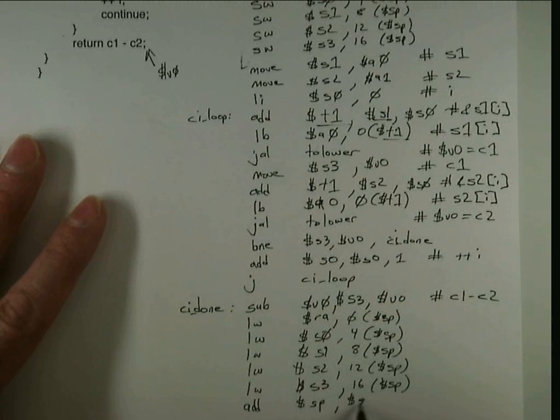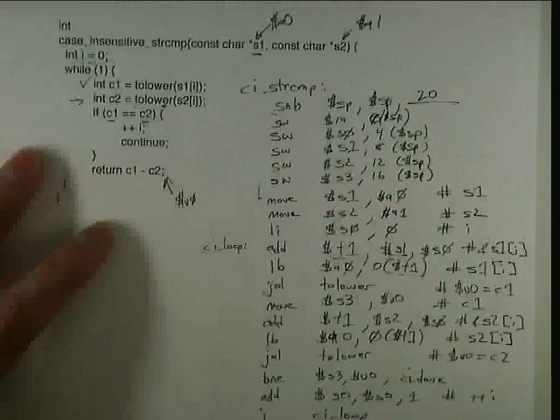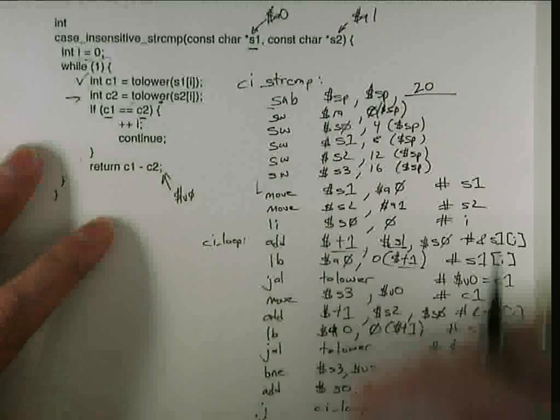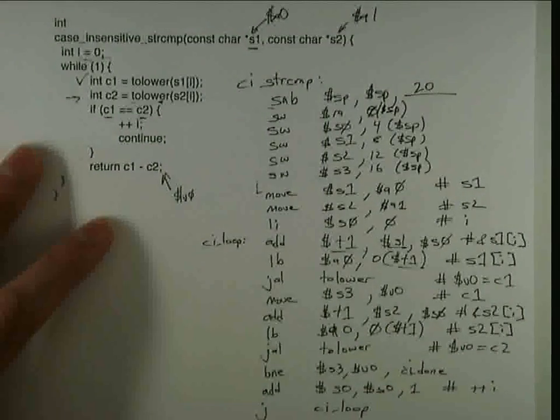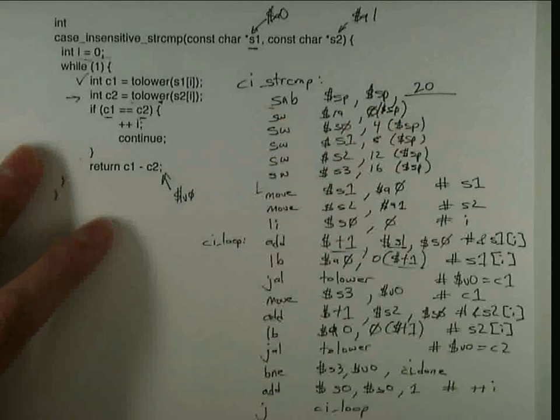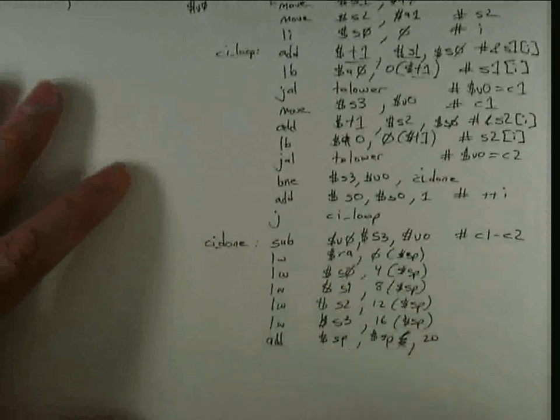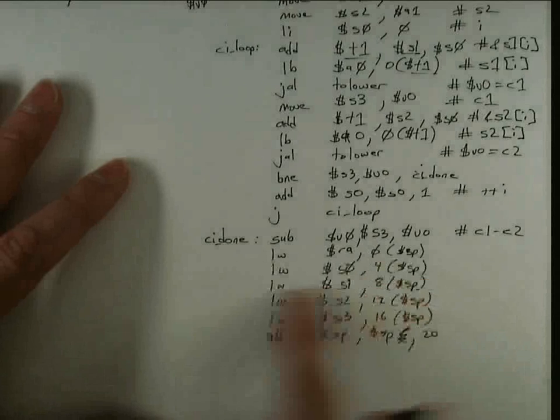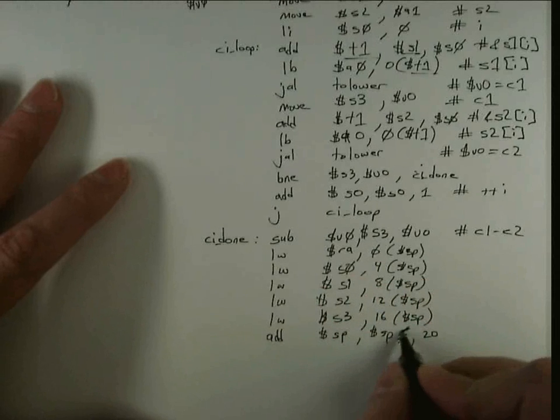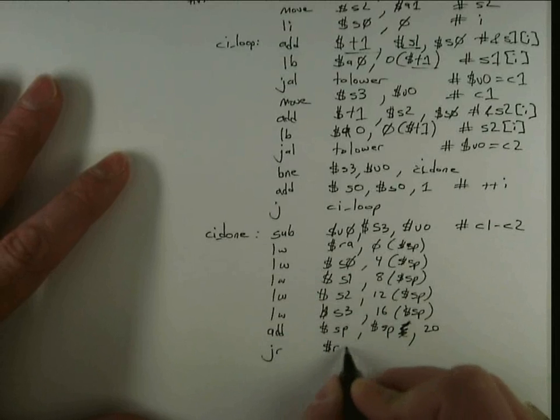So when you write this code on a machine, typically what I do is I copy this whole block of code and copy it down there, convert all the store words into load words, take the subtract and move it to the bottom and change it into an add, and that prevents me from making any bugs from mistyping one of these instructions. It's also faster. And then the last step is the jump RA.